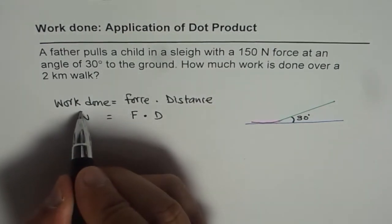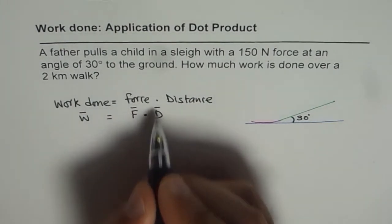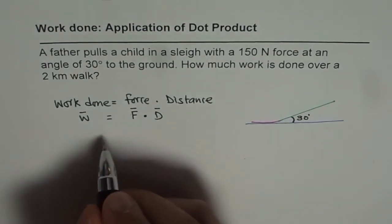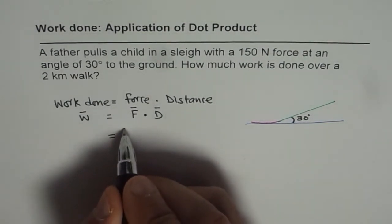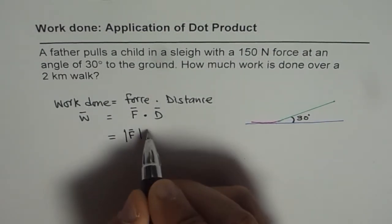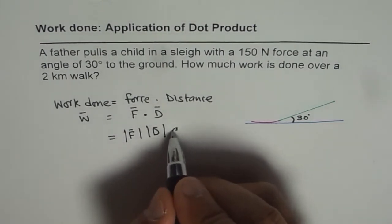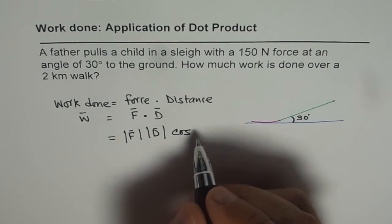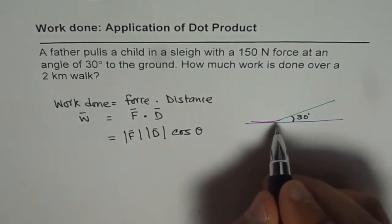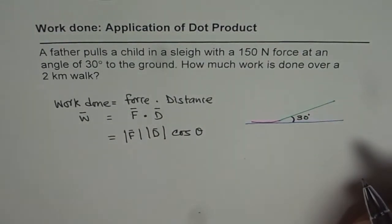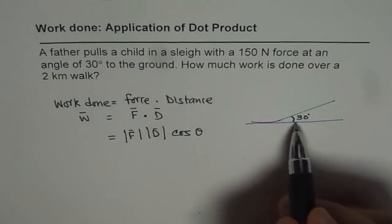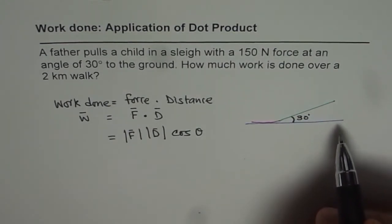So if work done is W, force is F, and D is the distance, then work done is force dot distance. Force dot distance means magnitude of force times magnitude of distance moved, times cosine of theta, the angle between the force applied and the distance it is moving through. Now cosine theta as you can see is a horizontal component. So that makes sense.